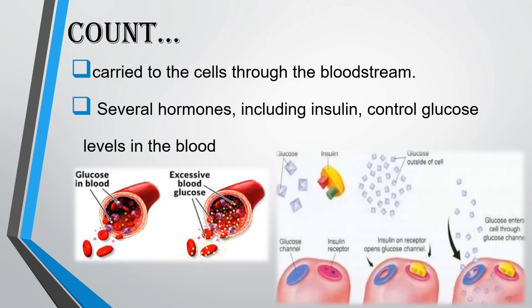Glucose is carried to the cells through the bloodstream. Several hormones, including insulin, control glucose levels in the blood.